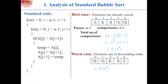In the average case, sometimes we may need to swap and sometimes we may not, depending entirely on the input elements. But regardless, both loops execute completely. So we again end up with (n-1) × (n-1) comparisons, and the average case is also O(n²). Therefore best, worst, and average cases for standard bubble sort are all O(n²).